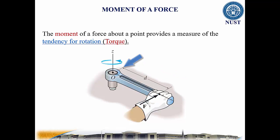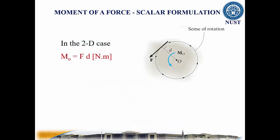The larger the force or the longer the moment arm, the greater the moment or the turning effect will be. However, if force is applied along the wrench, its moment arm will be zero since the line of action of force will intersect point O, the Z axis. As a result, the moment of force about O is also zero and no turning can occur.